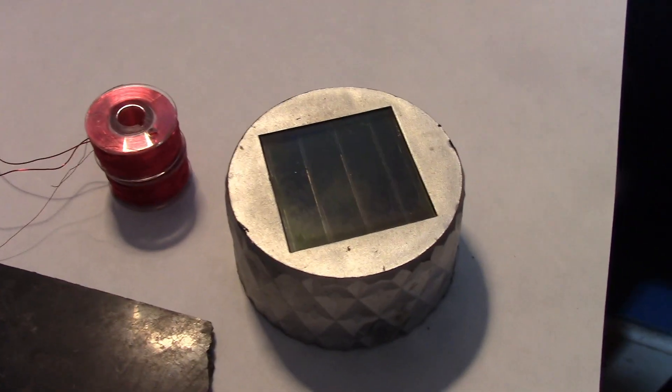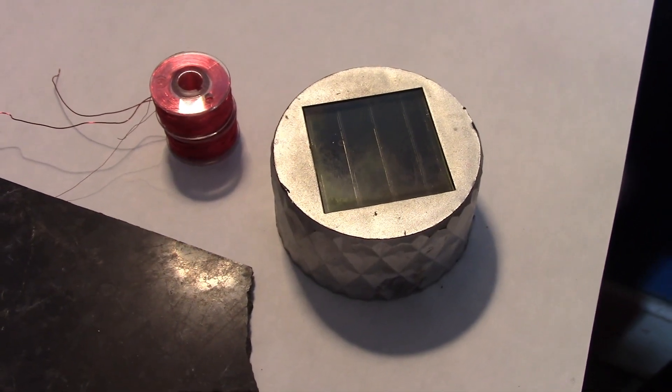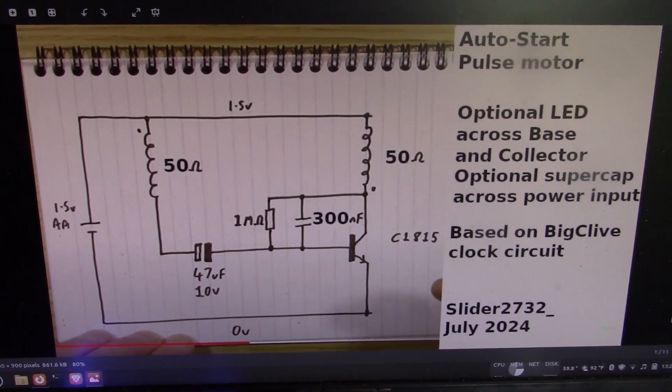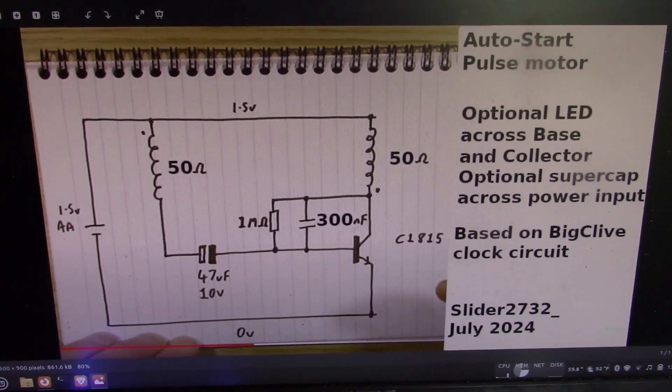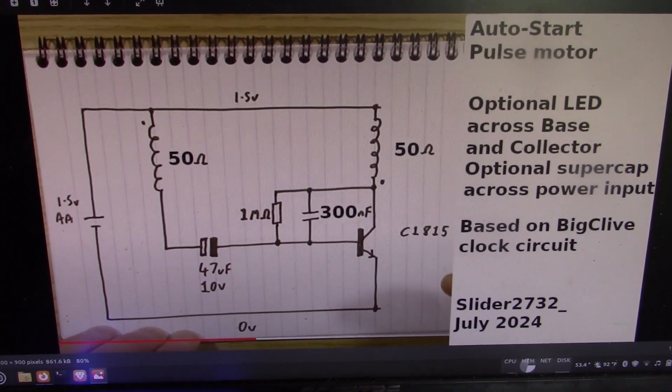Moving along, there's a solar panel on this old garden light top so I can take that out of there, and the circuit can be this one that I came up with last year and it's based on Big Clive's clock circuit, so that's the circuit I'll use.